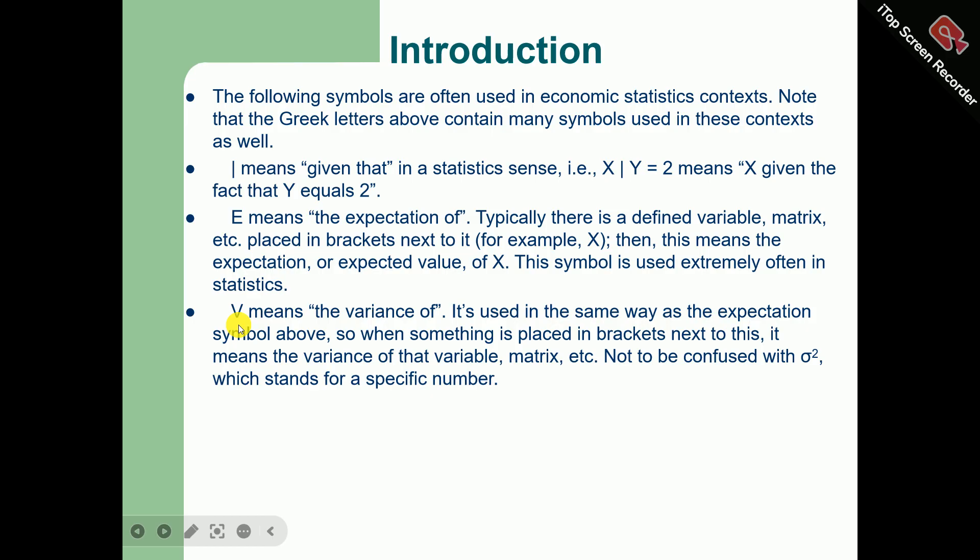Capital V, which is used in statistics, stands for the variance of. It's used in the same way as the expectation symbol that we discussed above. When something is placed in brackets next to this symbol, it means the variance of that variable or matrix. It should not be confused with sigma squared, which stands for a specific number. Sigma squared is the symbol for the population variance of a variable. This stands for the actual number that is the variance of something.